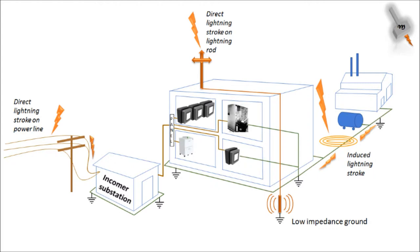The illustration shown here provides a more detailed idea of the different sources of surges induced in an electrical system and how they are diverted to earth. A direct lightning stroke can hit either a lightning rod or a power line. A strike on the lightning rod is grounded directly to earth. A strike on the power line travels along the conductor and, after reaching the substation, is diverted to ground through a surge arrestor.